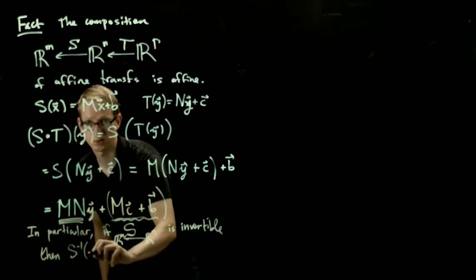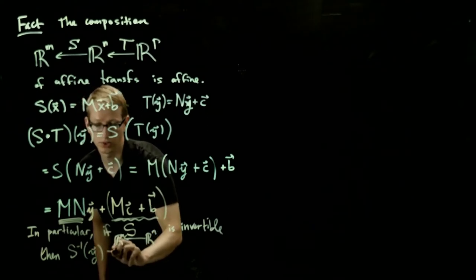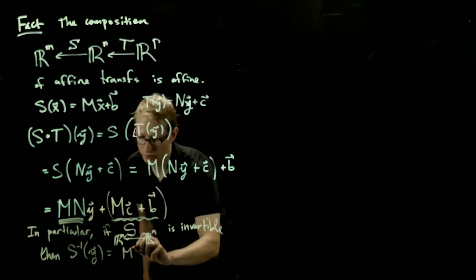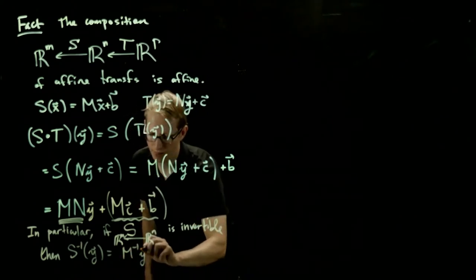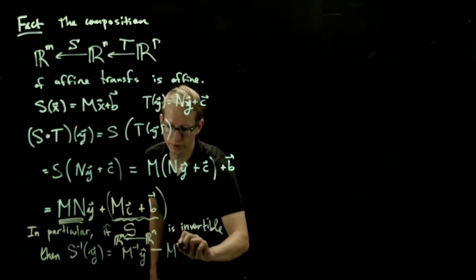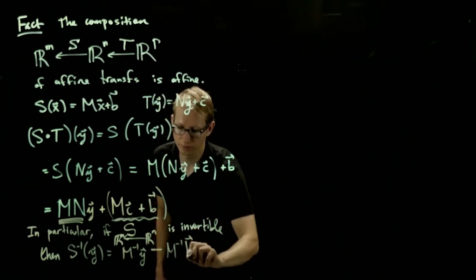And that is exactly, so S inverse of y, just because we're changing the co-domains with the domains, we get the inverse of M plus, well, rather minus, M inverse of the vector B.